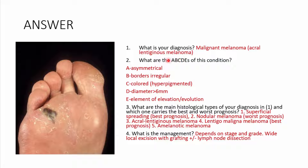The ABCDEs of melanoma: A stands for asymmetrical — not affecting both body parts symmetrically. B stands for borders, which are irregular. C stands for color — it's hyperpigmented. D is for diameter greater than six millimeters. E is for elevation or an evolving lesion. Those are the ABCDEs of melanoma.